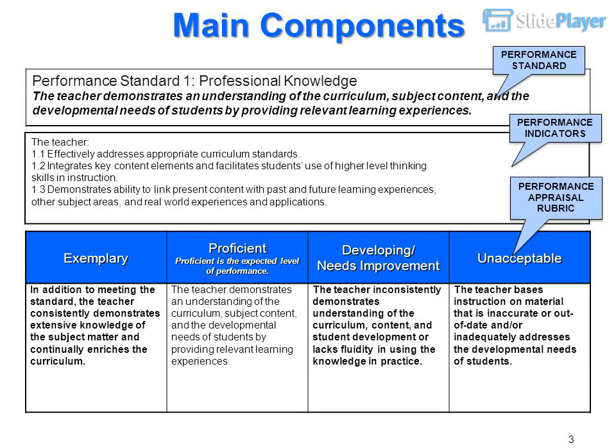Performance Appraisal Rubric levels: Exemplary, Proficient (the expected level of performance), Developing, Needs Improvement, and Unacceptable. Exemplary: in addition to meeting the standard, the teacher consistently demonstrates extensive knowledge of the subject matter and continually enriches the curriculum. Proficient: the teacher demonstrates an understanding of the curriculum, subject content, and the developmental needs of students by providing relevant learning experiences. Developing: the teacher inconsistently demonstrates understanding of the curriculum, content, and student development or lacks fluidity in using the knowledge in practice. Unacceptable: the teacher bases instruction on material that is inaccurate or out-of-date and/or inadequately addresses the developmental needs of students.